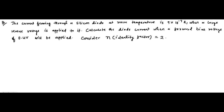Here we are with the first question on the diode equation or diode current equation. The question is: it is given that the current flowing through a silicon diode at room temperature is 9 × 10⁻⁷ ampere when a large reverse voltage is applied across the diode. Calculate the diode current when a forward bias voltage of 0.4 volt is applied.